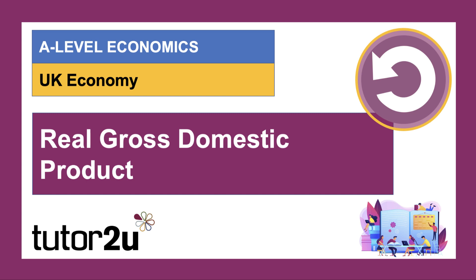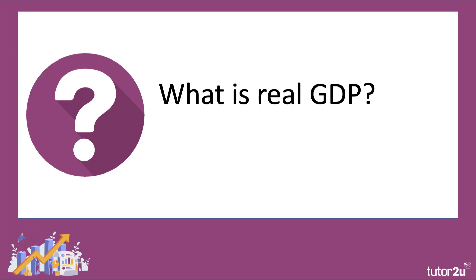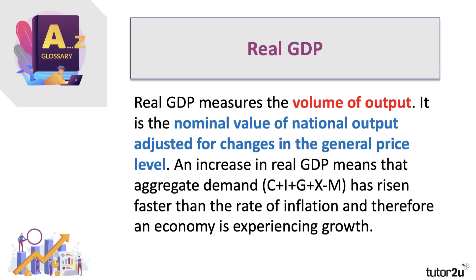Welcome to a macro video. Real GDP, or real national output, is one of the key macroeconomic indicators for any economy, including the UK. Real GDP is a measure of the volume of output produced by an economy over a period of time. It is the nominal, or money value, of national output adjusted for changes in the general price level (the GPL). An increase or expansion of real GDP means that aggregate demand has risen faster than the rate of inflation, and therefore an economy is experiencing economic growth.